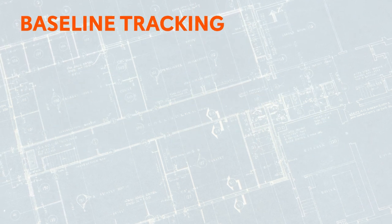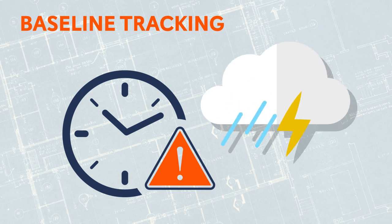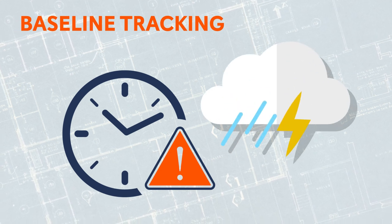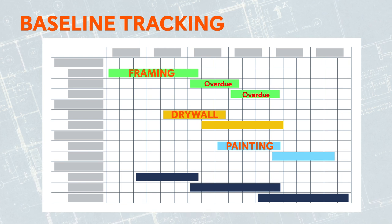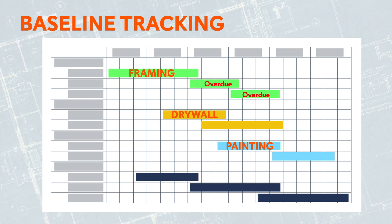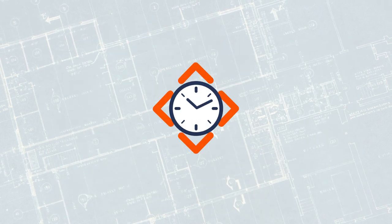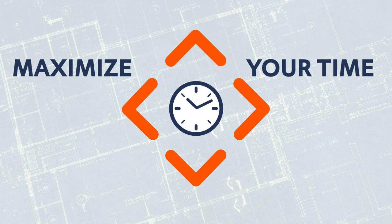With our Baseline Tracking feature, you can easily identify schedule delays. Do you know where in your schedule things start to go off track? Is it during framing or doing trim work? With Baseline Tracking, you'll know what is taking more or less time than scheduled. This allows you to better adjust and maximize your time.